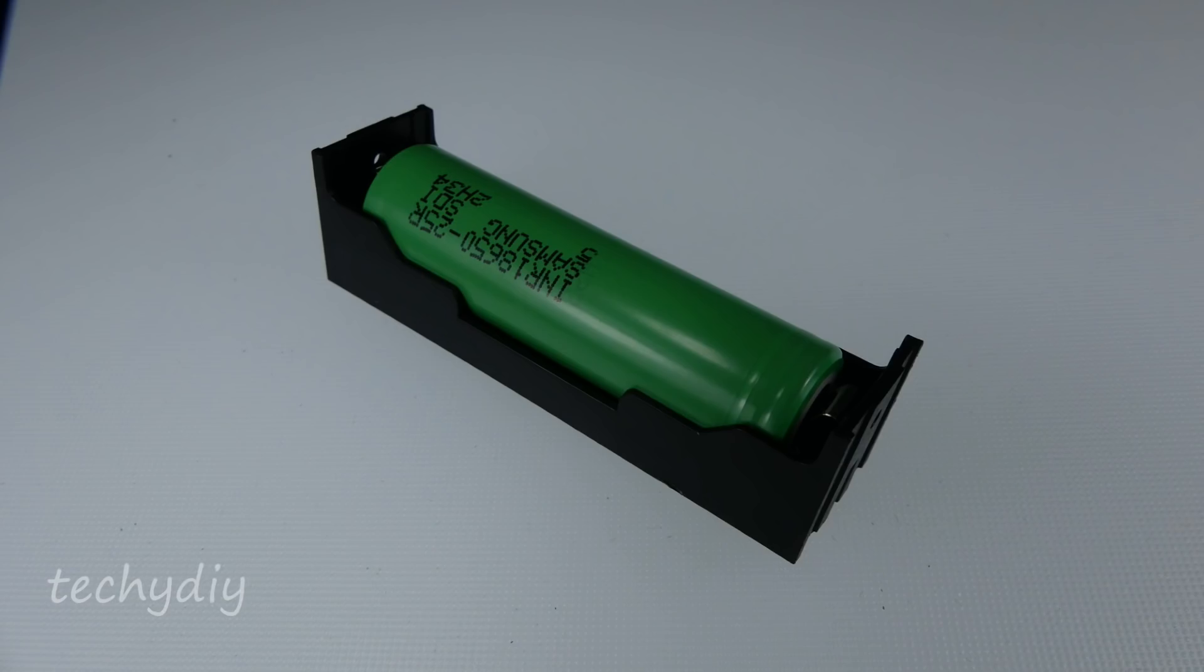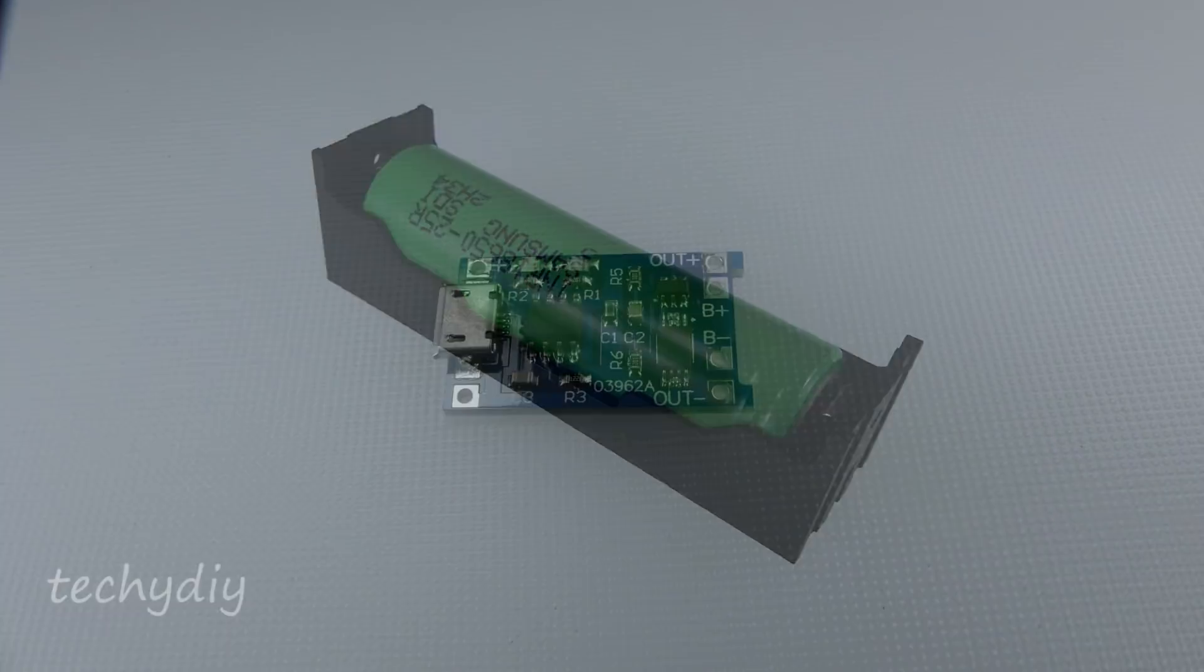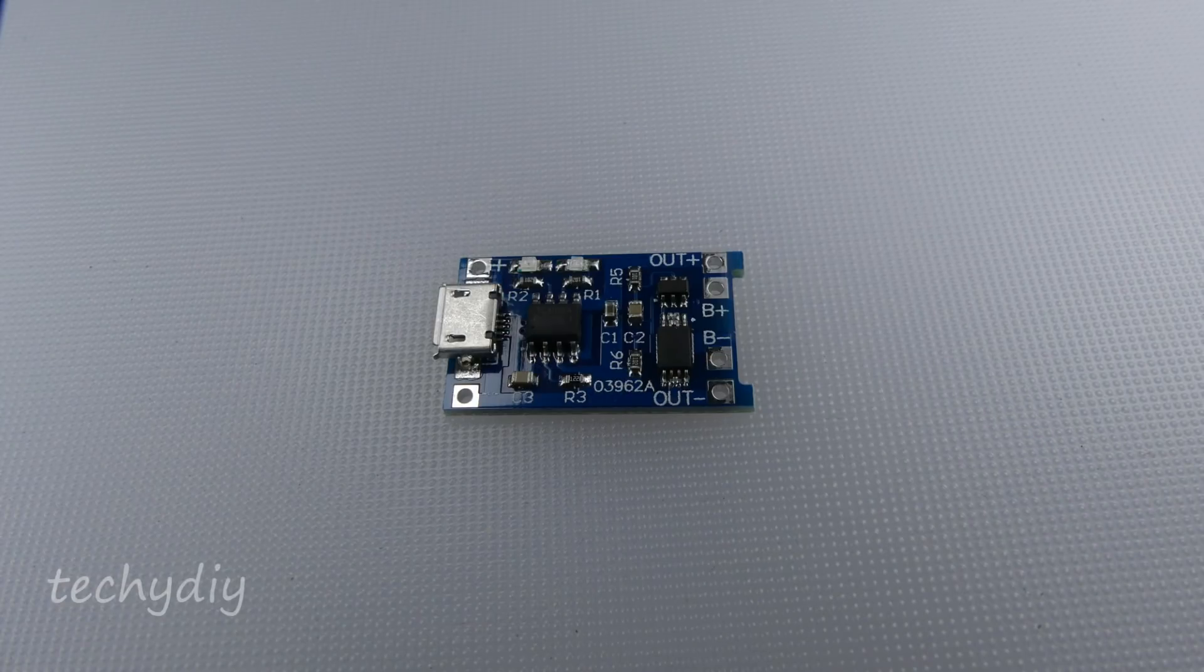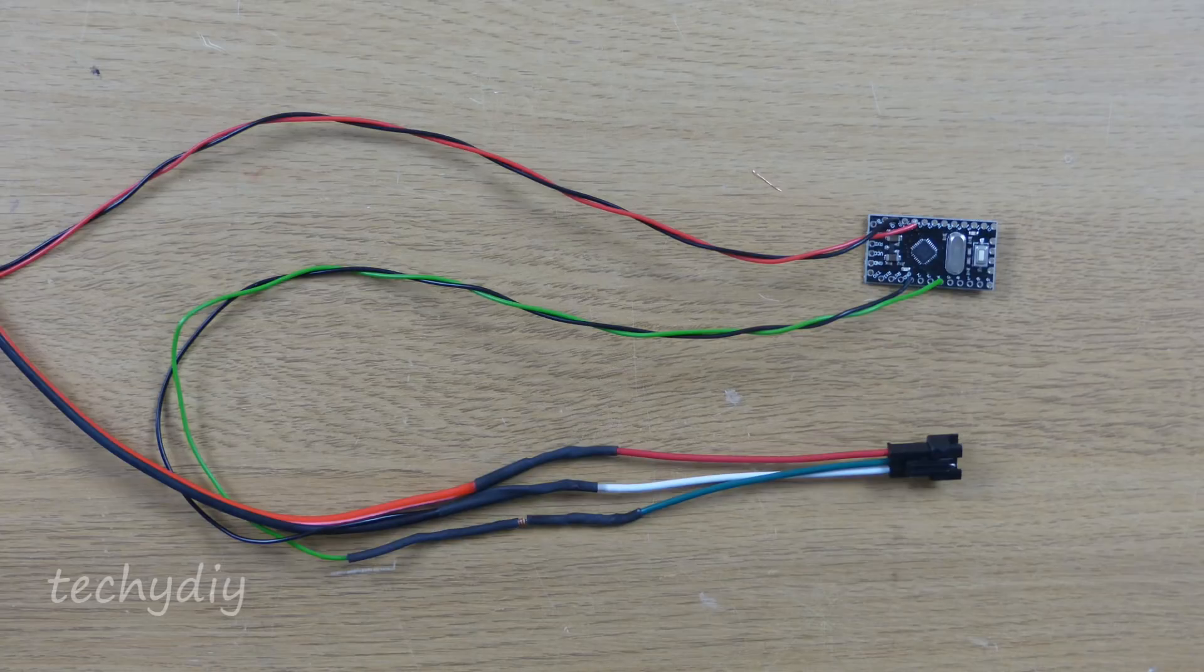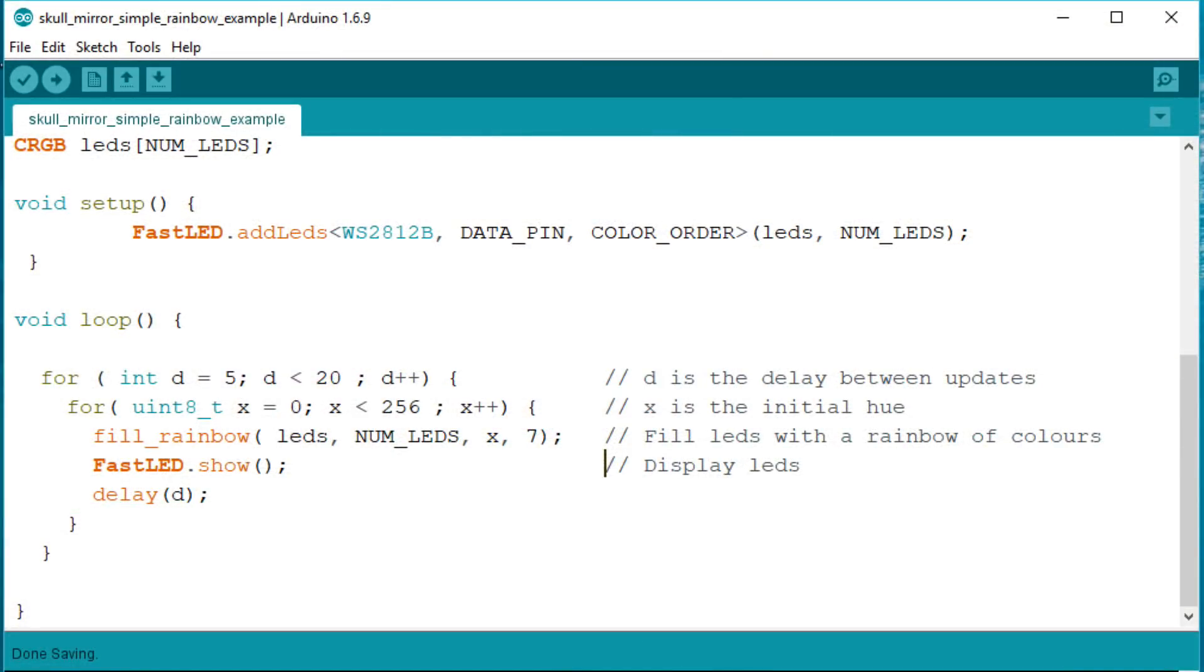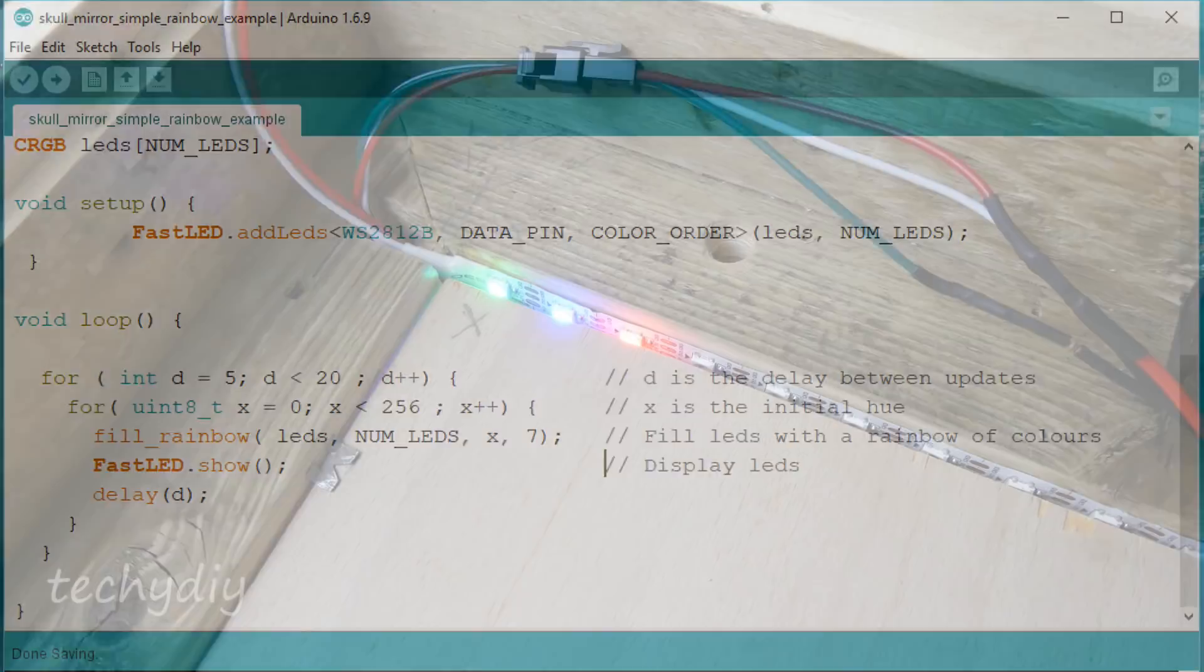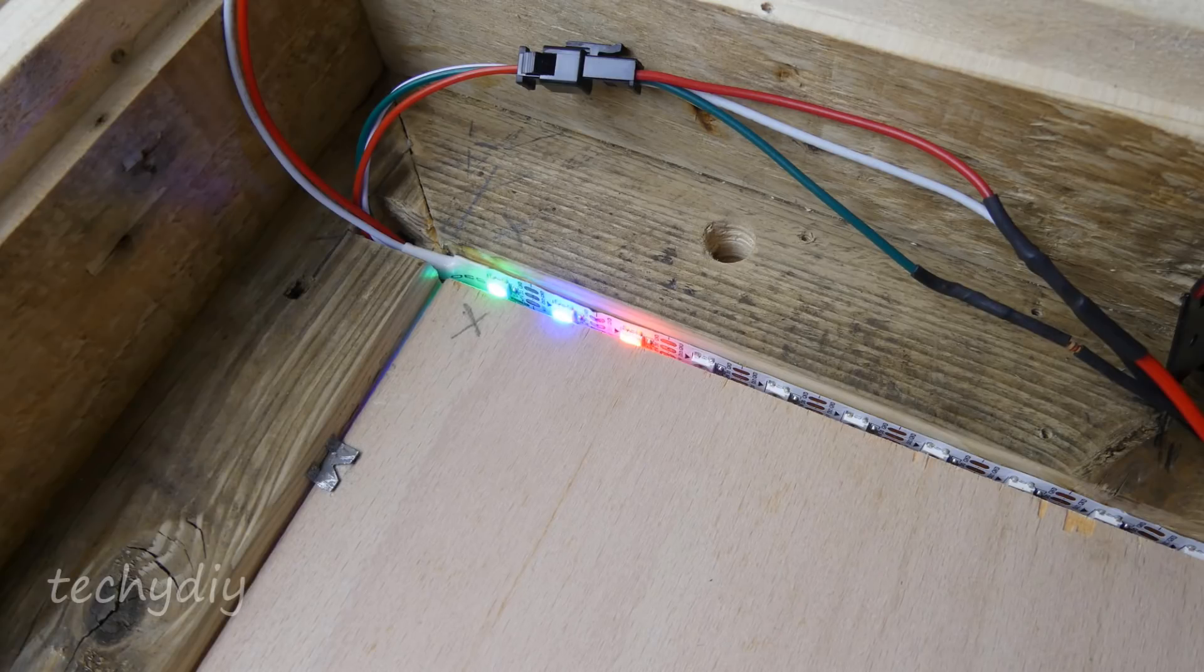The battery I'm going to use is an 18650 lithium cell and that will be charged and protected by a TP4056 module. The microcontroller is an Arduino Pro Mini clone and I'll use the fast LED library to program the WS2812B LED strip.